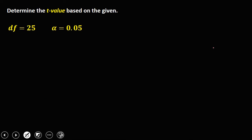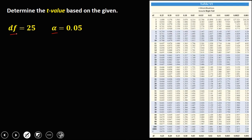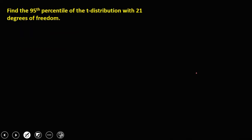For this given, the degrees of freedom is 25 and the area is 0.05. We can solve now for the t-value since we have the df, which is 25.